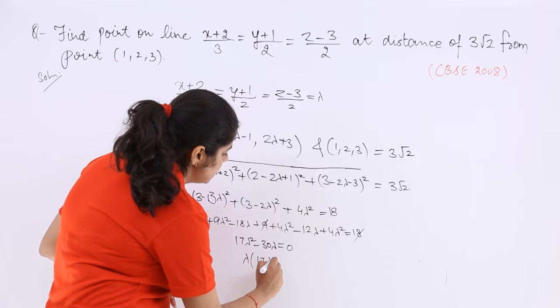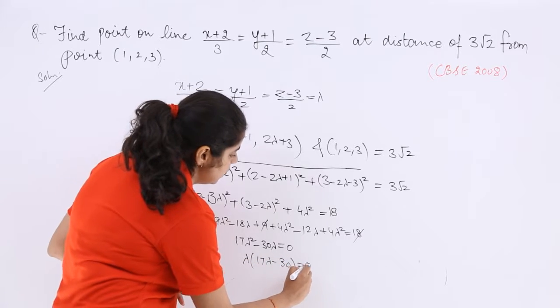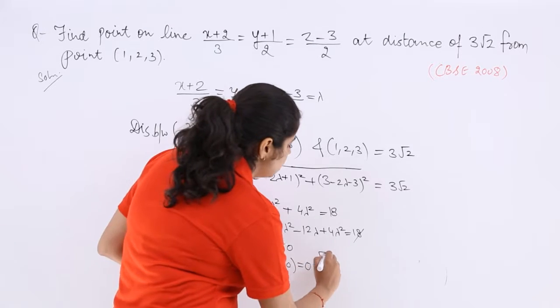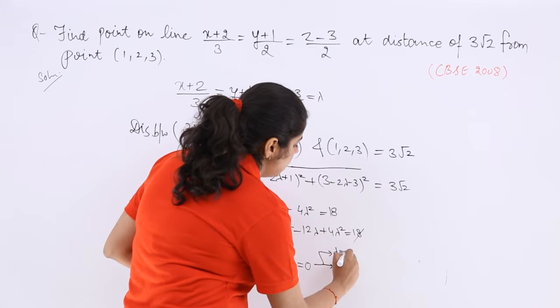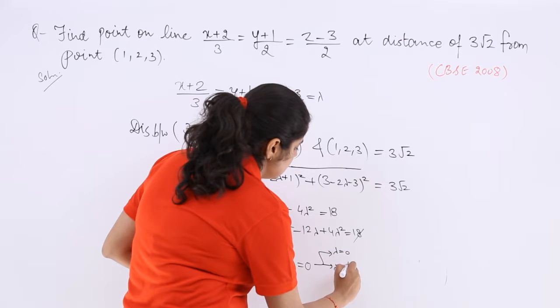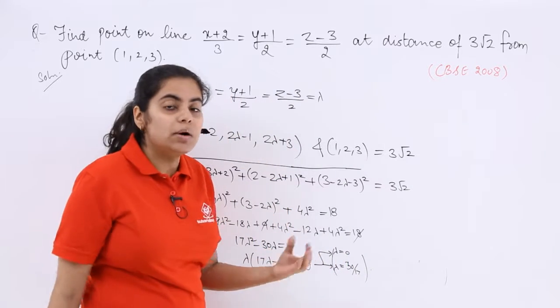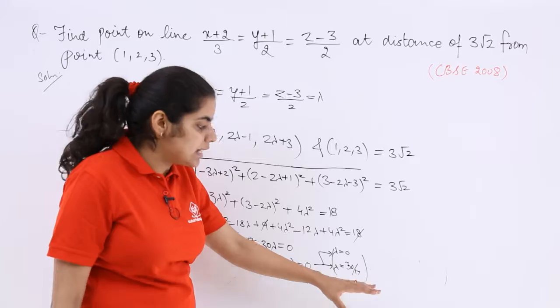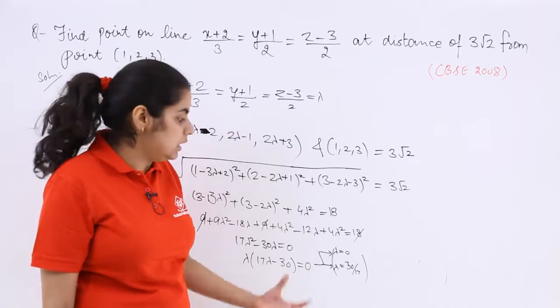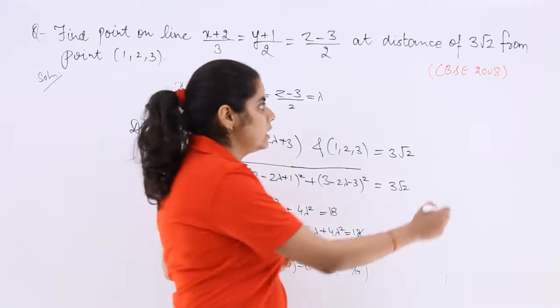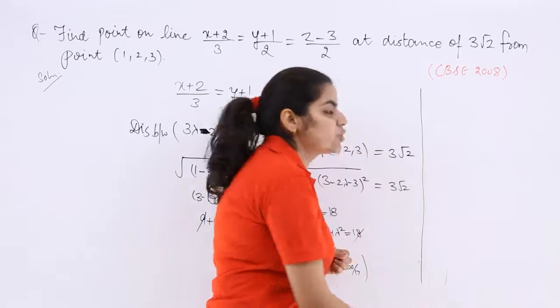So lambda multiply 17 lambda minus 30 is equal to 0. So there are 2 possible values of lambda. One is lambda is equal to 0, the other is lambda is equal to 30 over 17. Now one is lambda is equal to 30 upon 17. That means we can easily find out the rest of the thing.